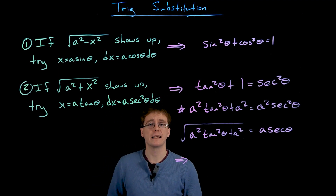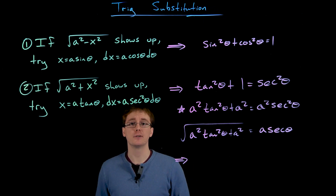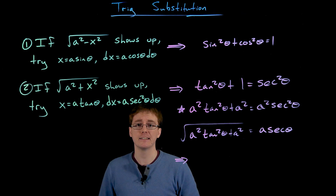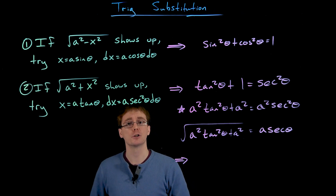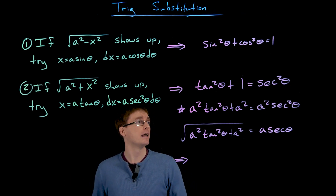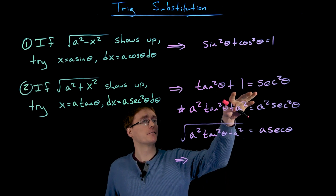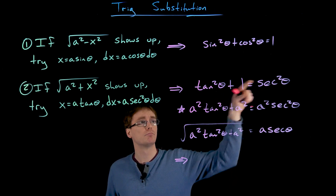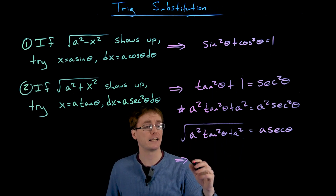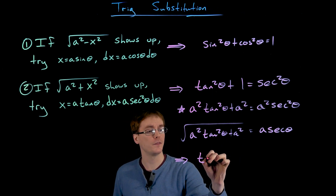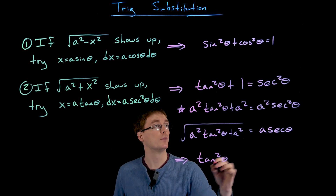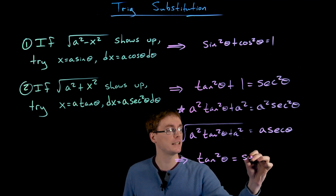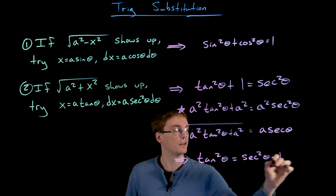There is one more case for trig substitution, and it still comes from this second Pythagorean identity. Instead of leaving it as tangent² + 1 = sec², we move things around and solve for tangent squared. Doing that gives us tangent squared of theta equals secant squared of theta minus one.